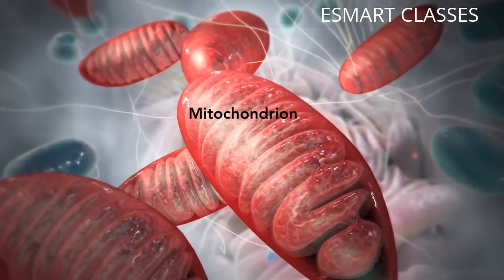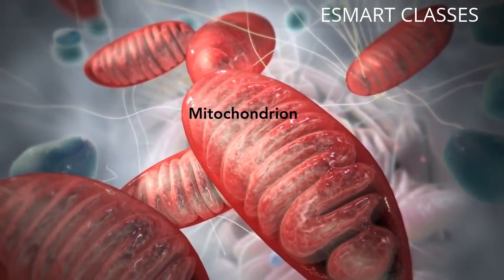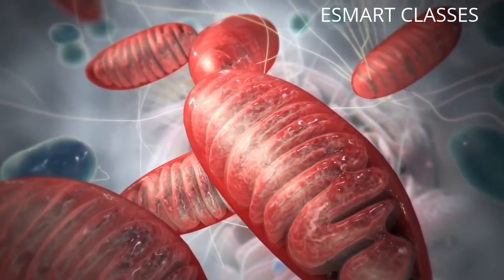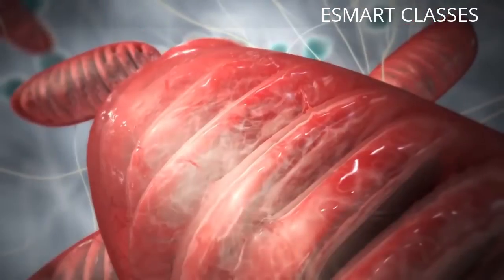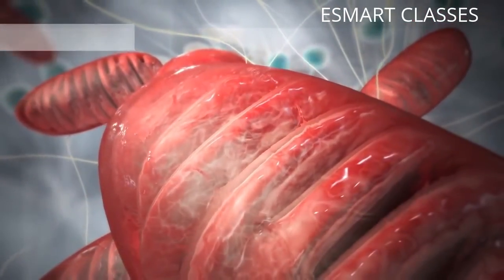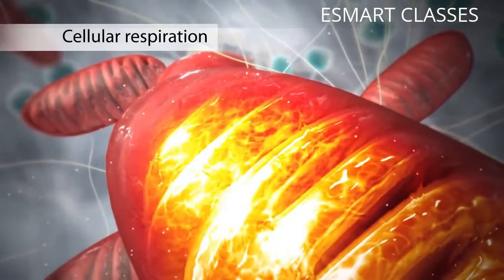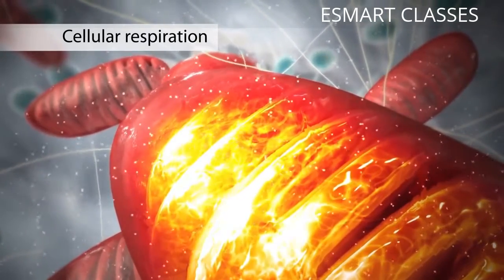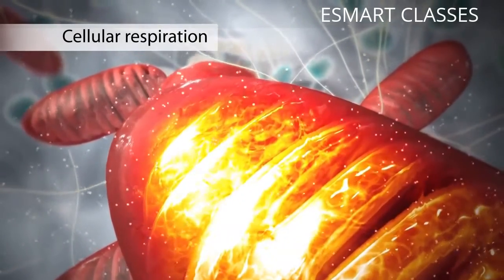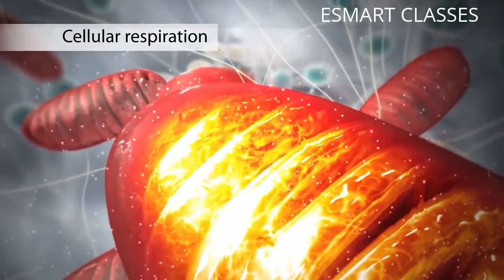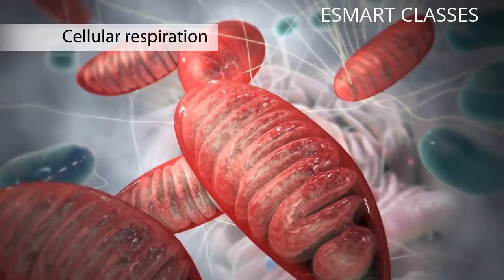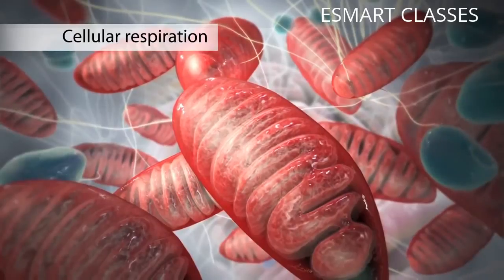The mitochondrion is an organelle that is the powerhouse for both animal and plant cells. During a process called cellular respiration, the mitochondria make ATP molecules that provide the energy for all of the cell's activities. Cells that need more energy have more mitochondria.